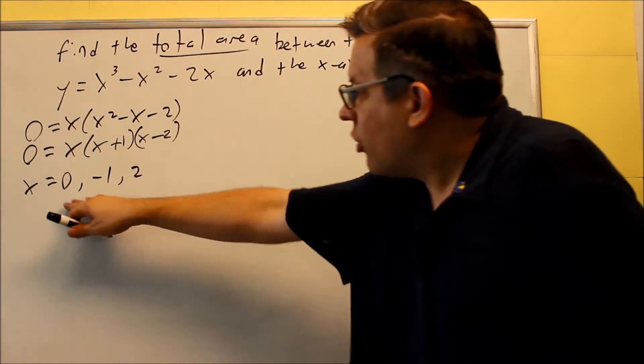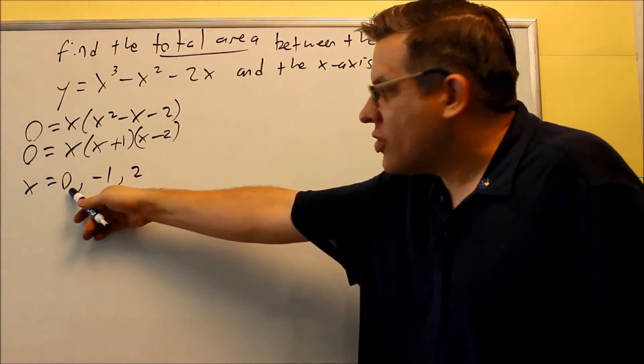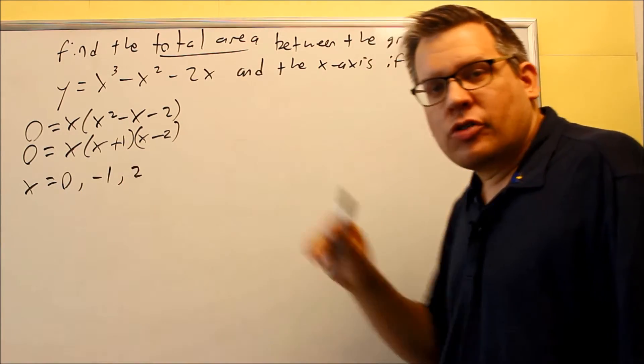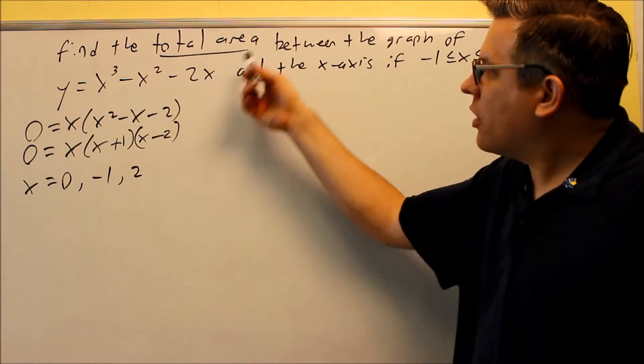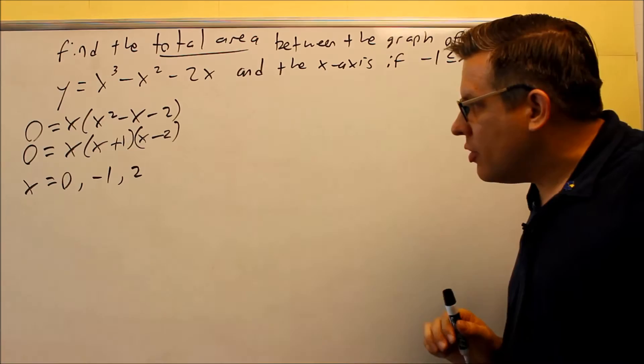So now we know how to split up our interval. We're going to go from negative one to zero and then we're going to go from zero to two to get us the total area all the way across. We have to do this process because it says the word total area and that's how we do these.